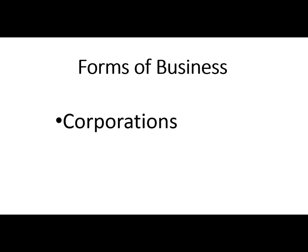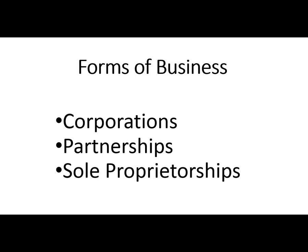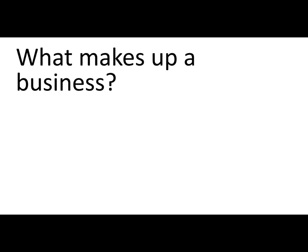Some background before we start actual accounting work: the forms of business. A corporation is a state-sanctioned business — you can't simply declare yourself a corporation; you must file paperwork and get approval from the state. A partnership can range from an informal handshake to a formal written document and requires more than one person. A sole proprietorship is simpler — if you decided to go into business today, most likely you'd do it as a sole proprietorship.